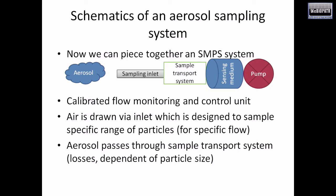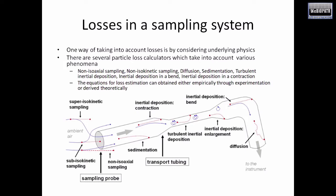This is the schematic of the aerosol sampling system: you have the sampling inlet, sample transport system, sampling medium, and a pump. This structure is the same for all particulate matter monitoring systems but can be pieced together at different levels of sophistication. For lab-grade instruments, they have calibrated flow monitoring and control units. You also have additional effects to consider — for example, when aerosol passes through the sample transport system it has losses that are dependent on particle size.